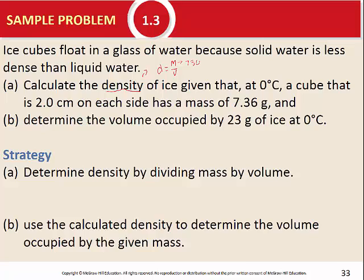We're not given a volume directly, but we're told it's a cube two centimeters on each side. Volume equals length times width times height, and by definition all sides of a cube are equal. So the volume is 2 cm × 2 cm × 2 cm. Two times two is four, times two is eight.